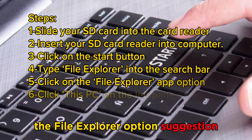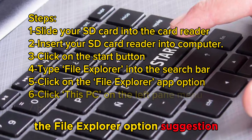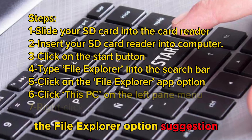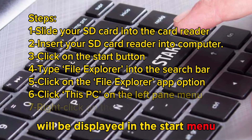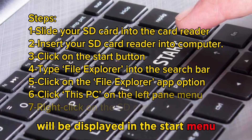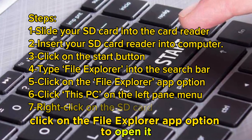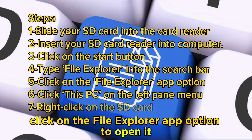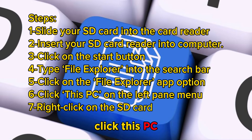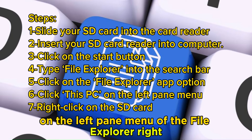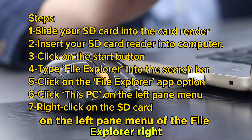The File Explorer option suggestion will be displayed in the Start menu. Click on the File Explorer app option to open it. Click This PC on the left pane menu of the File Explorer.